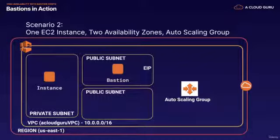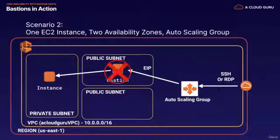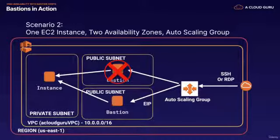We have an auto-scaling group with a minimum and maximum of one. You SSH or RDP into your Bastion host and then connect into the private instance behind it. If you happen to lose that Bastion host, auto-scaling is going to detect that, and because you've got a minimum of one, auto-scaling is going to provision a Bastion host in another subnet. You can actually use a user data script to take over that elastic IP address, and then you'll be able to SSH into the new Bastion, which is in a new subnet.